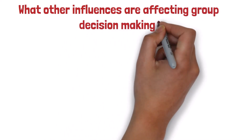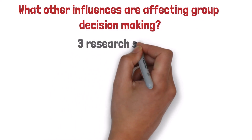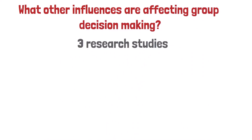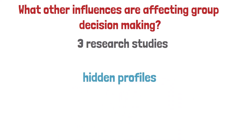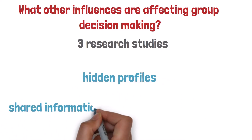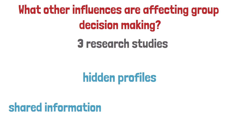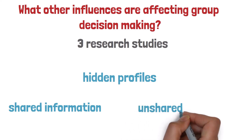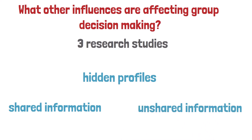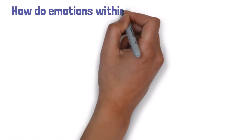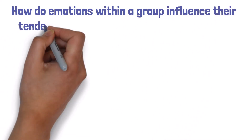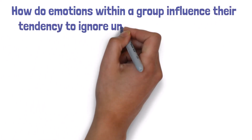We will now examine three research studies exploring specific factors. These studies all utilize hidden profiles — studies that provide a group with shared information that all members view, and also unshared information where each group member has information that the rest of the group does not. How do emotions within a group influence their tendency to ignore the unique expertise of other group members?